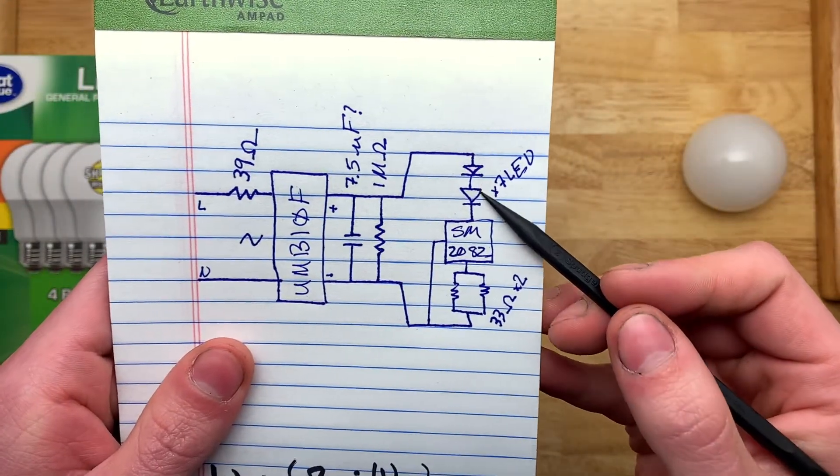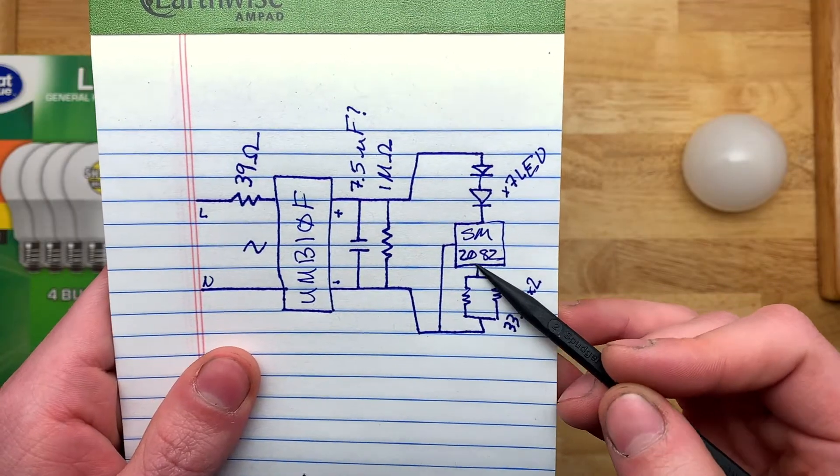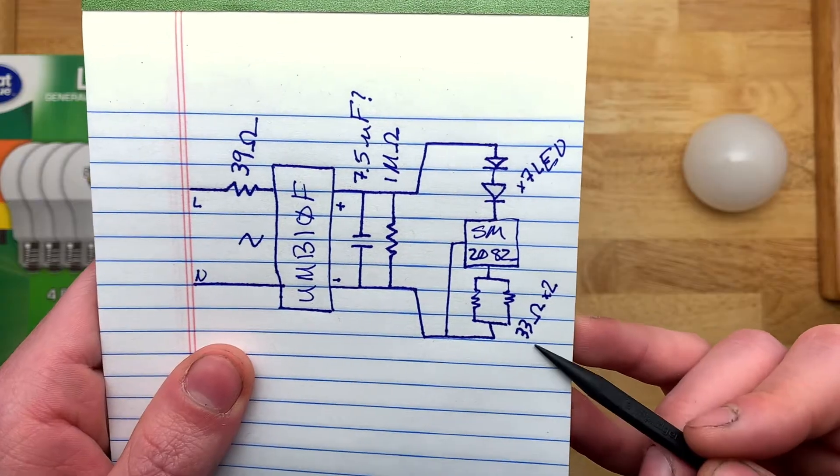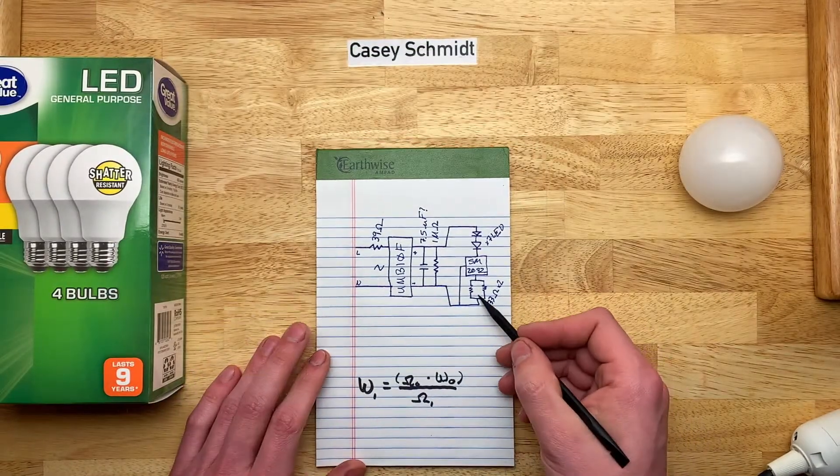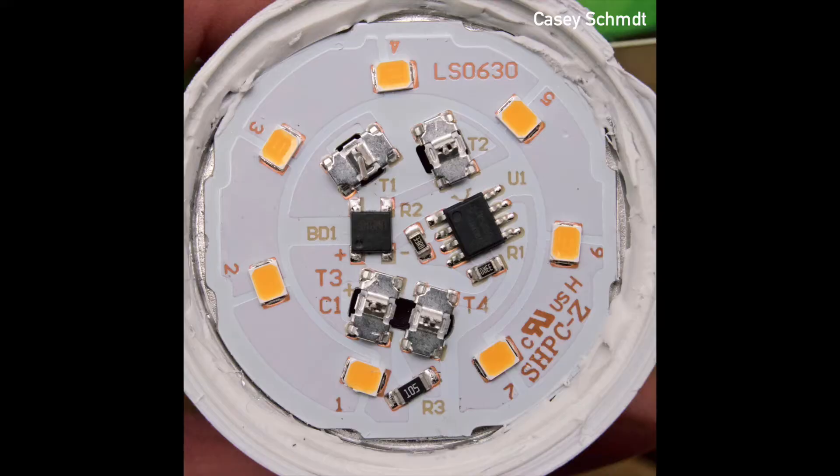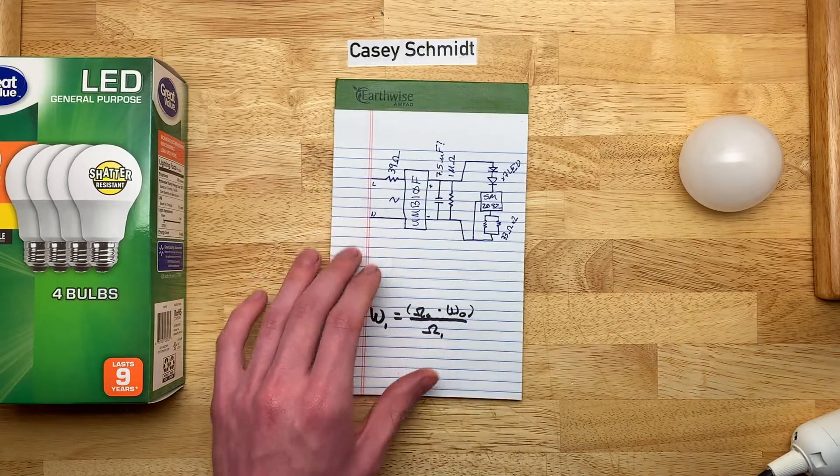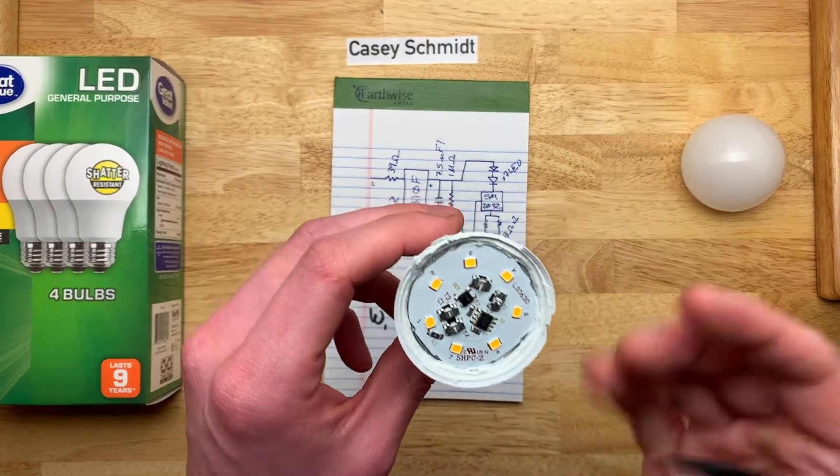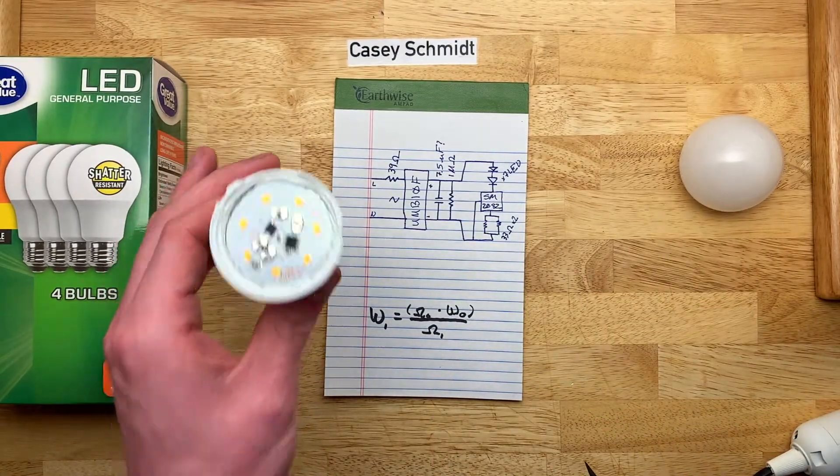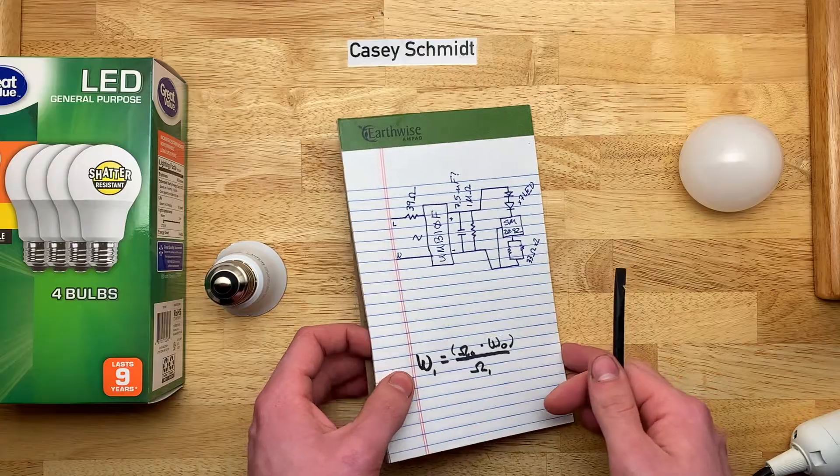And then you got seven LEDs in series. You got the SM2082 eight pin chip, and then our two 33 ohm resistors. I'll show you a high definition picture right now of what the circuit board looks like, and then with the full numbers for each of the two chips, the bridge rectifier and the eight pin chip. And the way that you hack these things is by removing one of these resistors, and there is a formula to figure out roughly what the change in wattage will be.